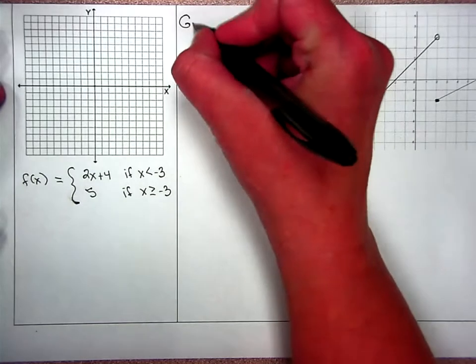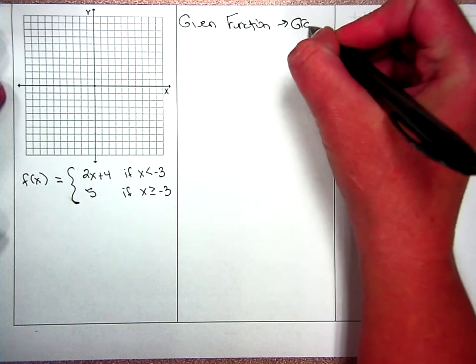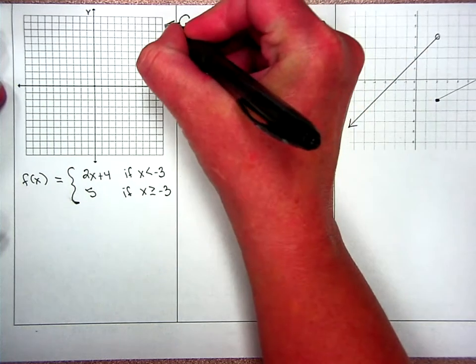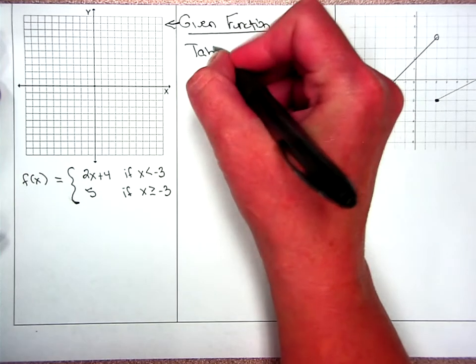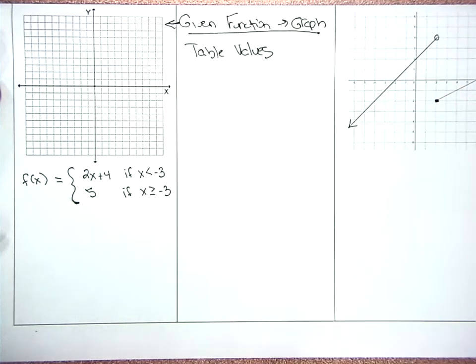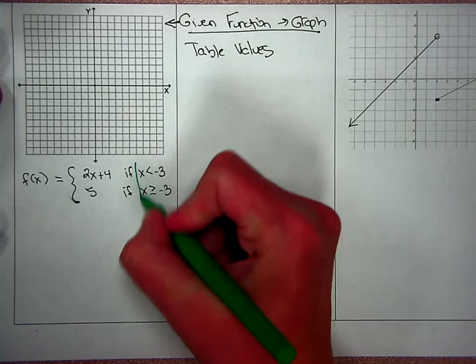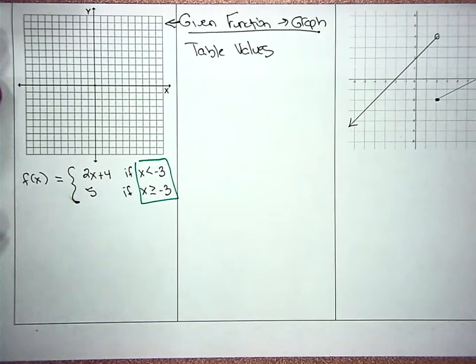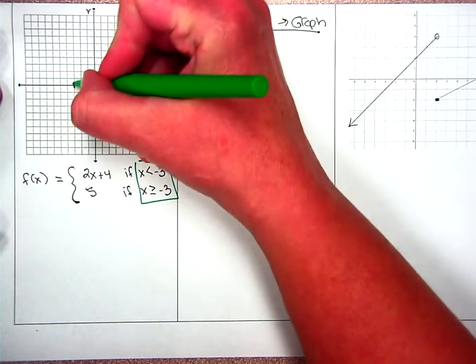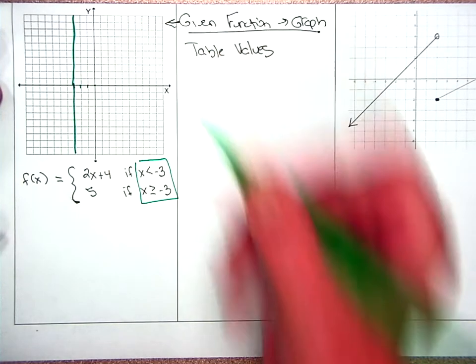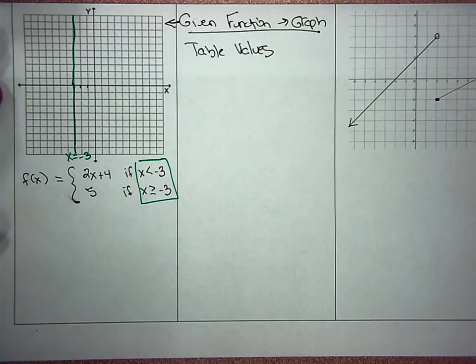On this first one, you're given a function and you have to graph it. You need to think table of values. That's what you're going to do. First thing I always do is I draw in my divide line or my boundary line. Line 1, 2, 3. x equals negative 3 is the boundary line that's going to separate the two functions.